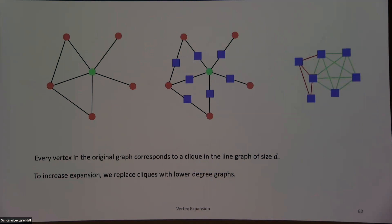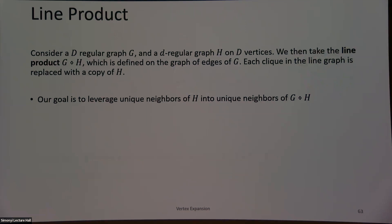The one thing we need to consider is that when I do this, every vertex in my original graph will create a clique in my new graph. So we're going to sparsify this line graph with a gadget. What they did is consider the line product on the graph of edges, replacing every clique with some other fixed graph H. Our goal is: if H has many unique neighbors, leverage those unique neighbors of H into unique neighbors of G times H.